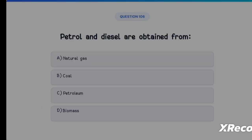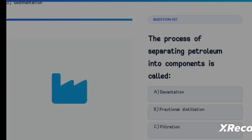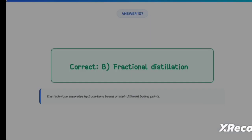Next question: petrol and diesel are obtained from Option A: Natural gas, Option B: Coal, Option C: Petroleum, Option D: Biomass. The correct answer is Option C, Petroleum — it is refined to produce various fuels including petrol and diesel. Next: the process of separating petroleum into components is called Option A: Decantation, Option B: Fractional distillation, Option C: Filtration. The correct answer is Option B, Fractional distillation — this technique separates hydrocarbons based on different boiling points.